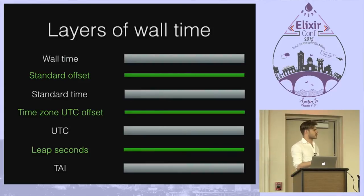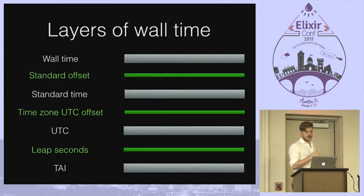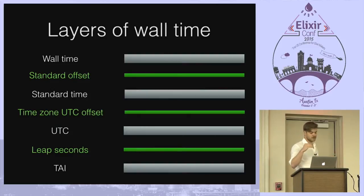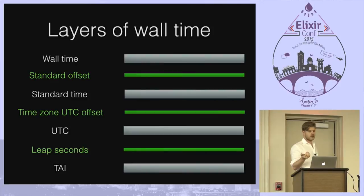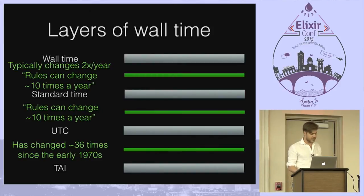So when you look at the time on the wall, how is that actually defined? At the bottom you have TAI; you add leap seconds and you get UTC. Then if you used UTC directly, the day would change in the afternoon — not very practical. So you add time zone offsets to get standard time. On top of that you add the offset to get wall time. Right now we have summer time, so that's one hour. All of these things in green can change.